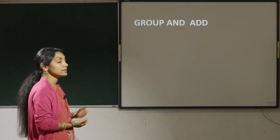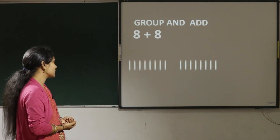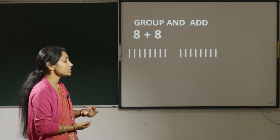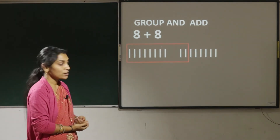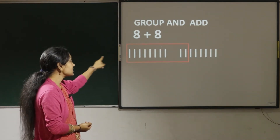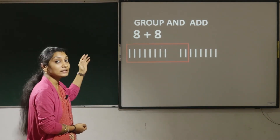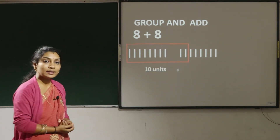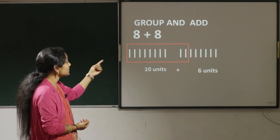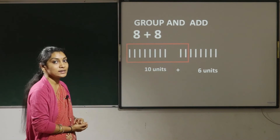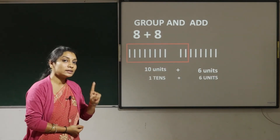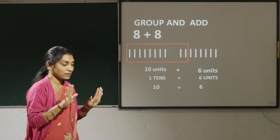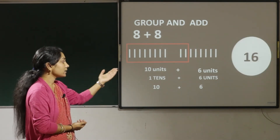Next let us group and add: 8 plus 8. Here we have 8 sticks and there also 8 sticks. First let us group into tens. The sticks inside the box — there are 10 sticks inside the box. 10 sticks means 10 units, so 10 units plus 6 units, as outside the box there are 6 sticks. 10 units means 1 ten, so 1 ten plus 6 units. 10 plus 6 is 16.